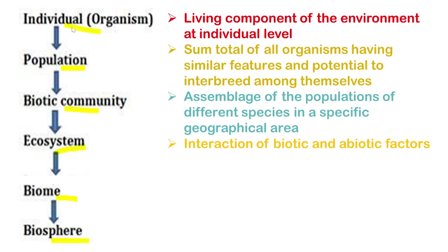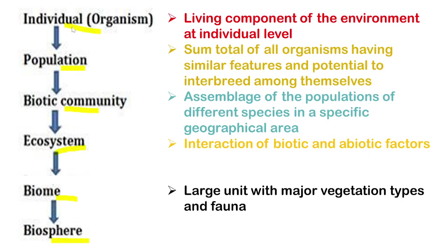A biome constitutes a large unit with major vegetation types and fauna — animals. A biome is a large area having different types of biotic communities and a specific type of fauna or vegetation associated with it, mainly dependent on the climate of that region. For example, the desert biome has very dry, extreme heat with very little rainfall; the tropical rainforest has conditions in the optimum range. Finally, the biosphere is the sum of all ecosystems where life exists on earth.